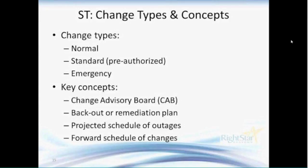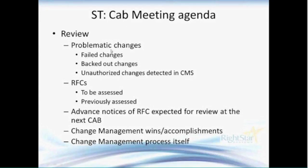This is where configuration management comes into play and is so important. It helps us identify, for example, if I'm going to upgrade a particular database on a specific system, I don't want to be patching that system at the same time. During a CAB meeting, we want to review problematic changes — sometimes called a postmortem — looking at changes that may have failed, been backed out, or were unauthorized. If we have a discovery tool, it may help us identify changes to a server or infrastructure component where there is no corresponding approved change request.